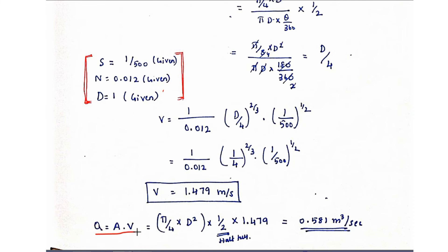Q equals a into v, area into velocity. The area equals pi by 4 into d square and the sewer is running half full, so we put 1 by 2 over here into the velocity value 1.479. Finally we got the value of 0.581 meter cube per second.